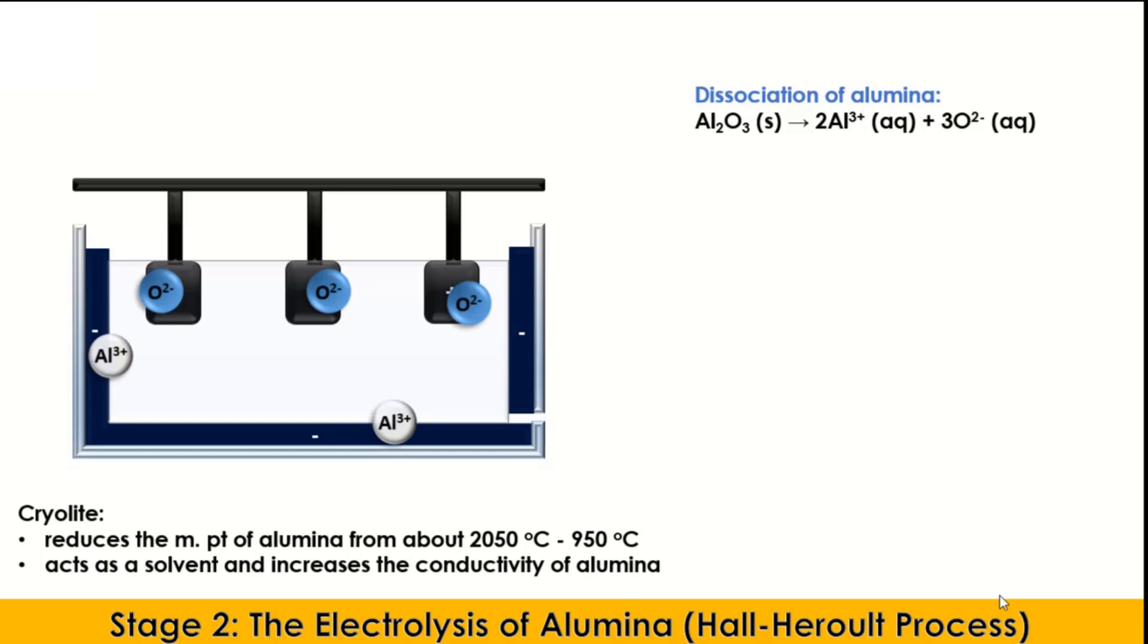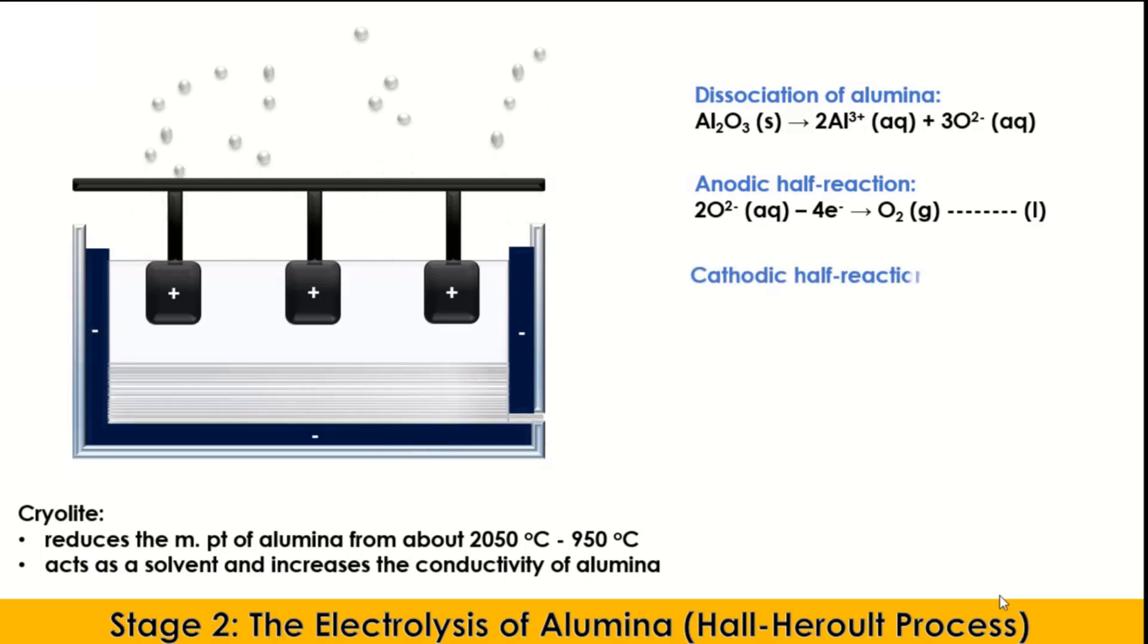At the anode, the oxide ions undergo oxidation by losing two electrons to form oxygen gas, as shown in the anodic half equation. The electrons lost travel through the external circuit to the cathode. At the cathode, the aluminum ions undergo reduction by gaining the electrons to become deposited as metallic aluminum according to the cathodic half equation.